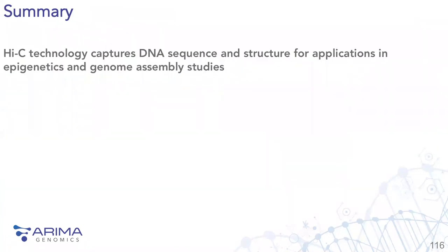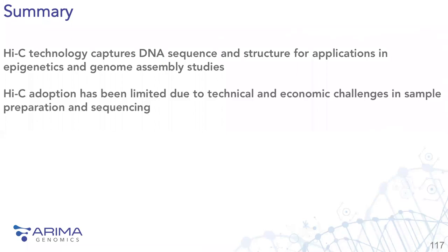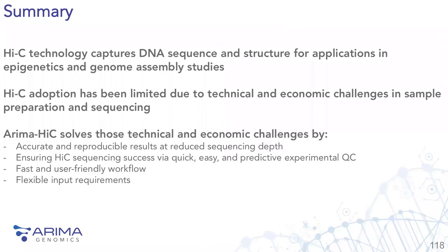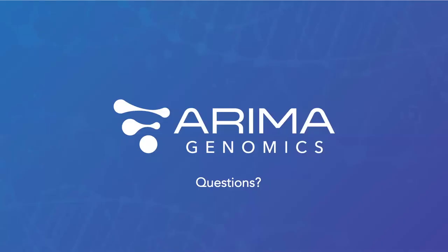In summary, Hi-C technology captures DNA sequence and DNA structure for applications in epigenetics and genome assembly research. Hi-C adoption has been generally limited due to technical and economic challenges in sample prep and sequencing. ARIMA Hi-C aims to solve those challenges by providing accurate and reproducible results at a reduced sequencing depth, quick and predictive QC checkpoints, a fast and user-friendly six-hour workflow, and flexible sample input requirements.